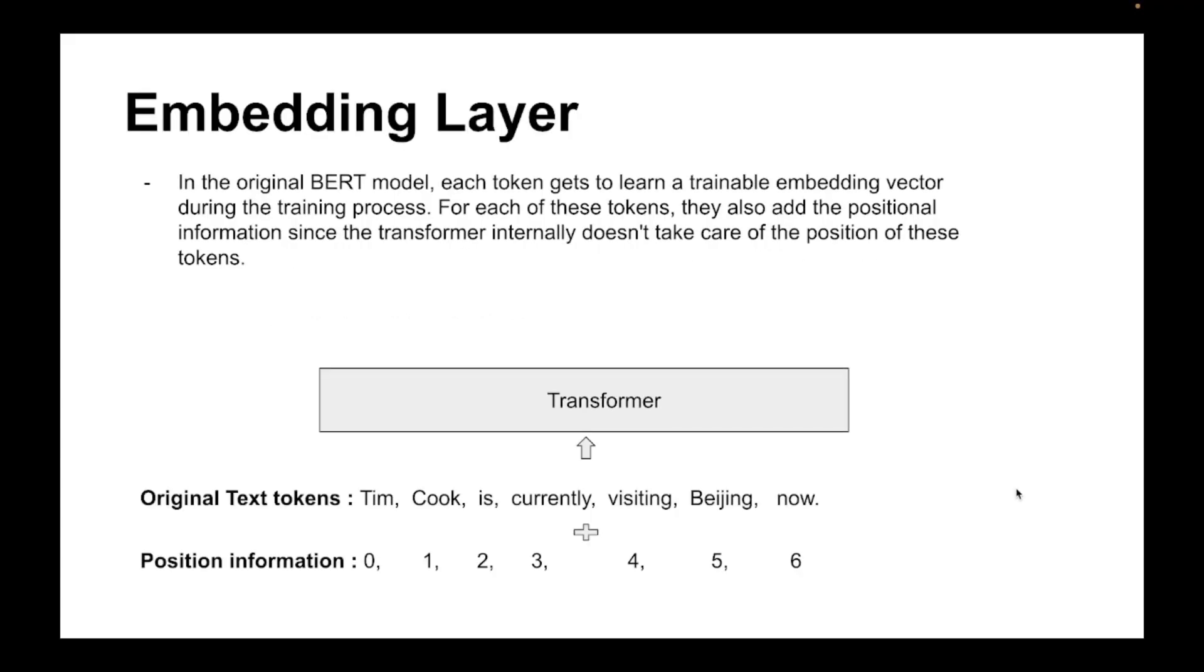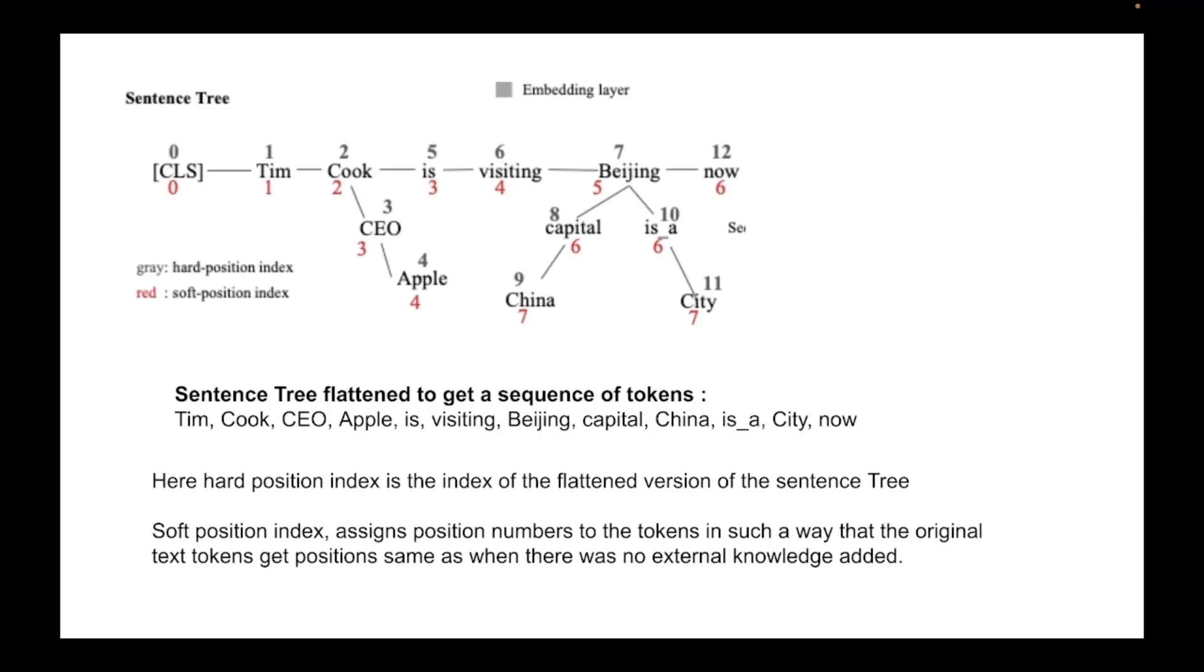So in the original BERT model, each token gets to learn a trainable embedding vector during the training process. For each of these tokens they also add this positional information, since the transformer internally doesn't take care of the position of these tokens. So this is how it works in the original BERT model. Now let's see what happens in K-BERT.